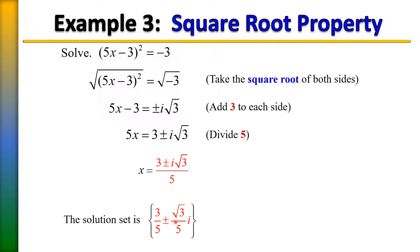On the right side we had i radical 3. If I place a 5 under that, I can write it as radical 3 over 5 and simply place the i on the back here.